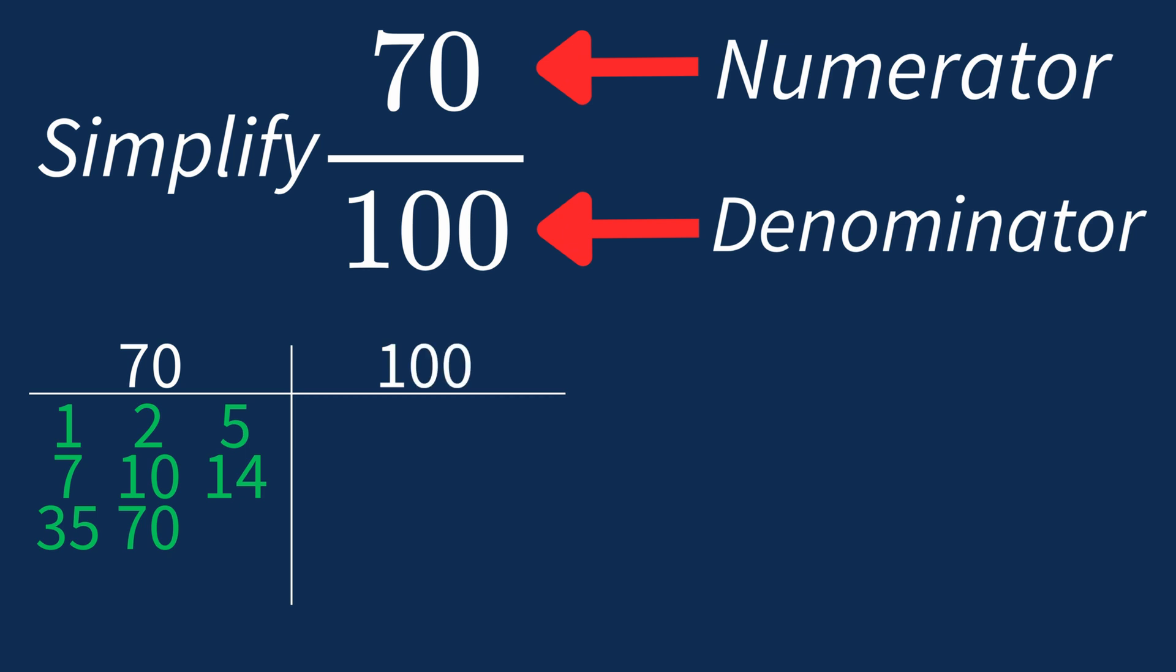For 100, the factors are 1, 2, 4, 5, 10, 20, 25, 50, and 100. So the largest common factor between 70 and 100 is 10.